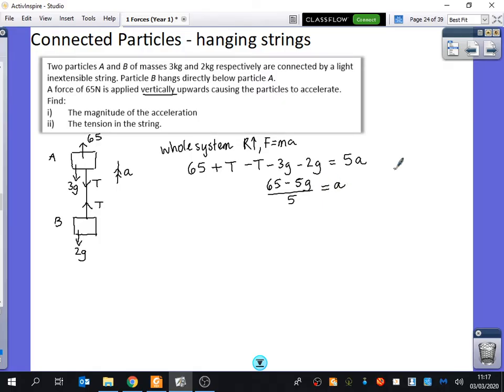Now remember, G we will usually take to be 9.8. So I can do 65 minus 5 times 9.8 divided by 5. And we get that the acceleration is 3.2 exactly. 3.2 meters per second squared. What questions do we have about this here?